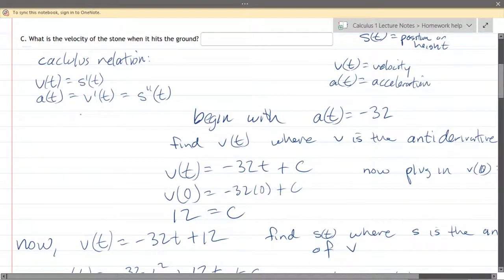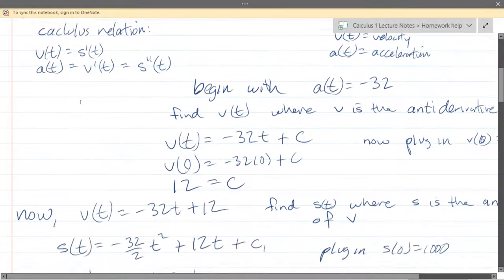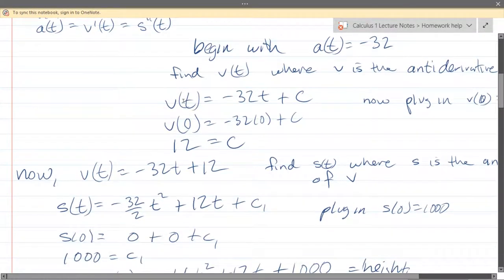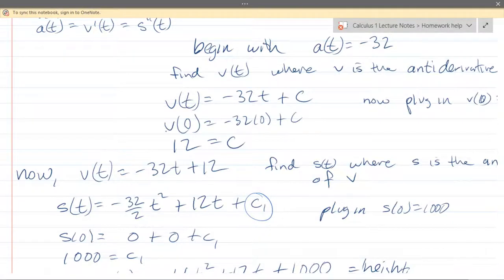So we replace that 12 in here for the constant so we're rewriting our velocity function with the proper value in for c and we're ready to take another anti-derivative. The anti-derivative of t is t squared over 2 or one half t squared, anti-derivative of 12 is 12t plus now we have a new constant I call this c1. You might be tempted to use another letter of alphabet but you want to avoid at all costs using letter d for anything except derivative.